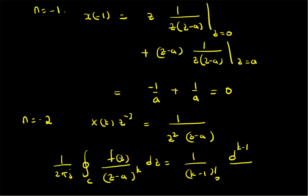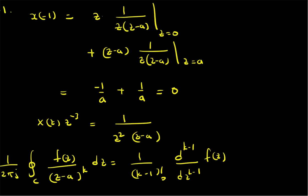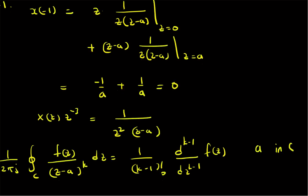This formula is valid when the pole a is inside C. The integral equals zero when a is not in C, and when a is inside C the value is given by the derivative formula — specifically the (k-1)-th derivative of f(z) evaluated at z = a.